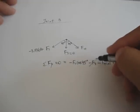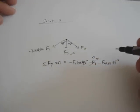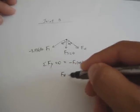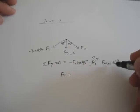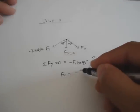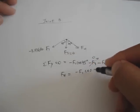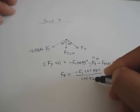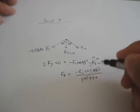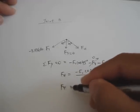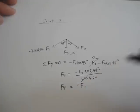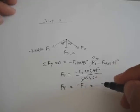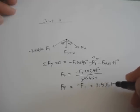Solve that for zero. Let's just put that out. F4 is equal to minus F1 cosine of 45 degrees divided by cosine of 45 degrees. That cancels out. That means F4 is equal to minus F1, which means it's plus 3.536 kips.